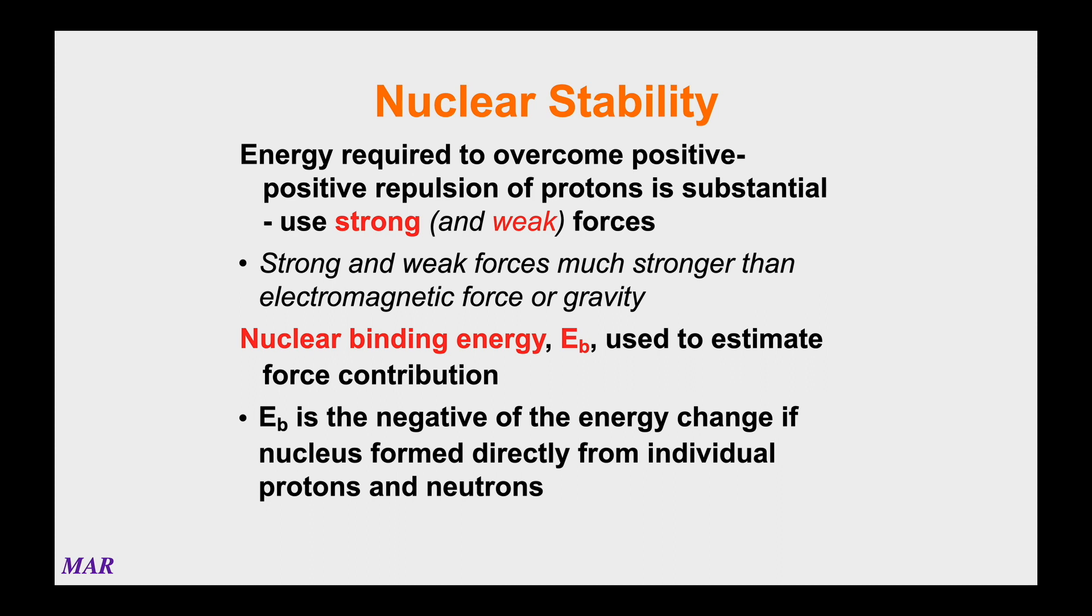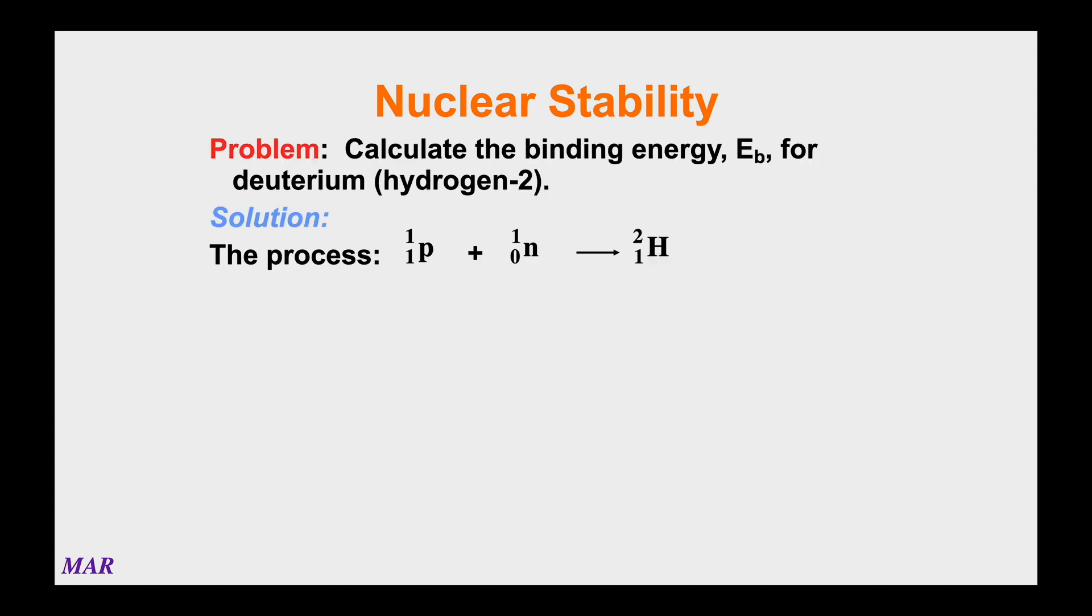We're going to do an example of this E_b calculation for a helium-4 nucleus. Helium-4 comes from two protons and two neutrons, so we're basically going to do a delta E calculation for that reaction. Whatever number we get, we're going to take the negative of it, so binding energies will turn out to be positive numbers. Let's calculate the binding energy for making deuterium. Deuterium is an isotope of hydrogen, hydrogen-2, sometimes referred to as heavy hydrogen. In this process you would take one proton and one neutron, add them together to make hydrogen-2. The protons plus the neutrons making the atom is what you want to do for these binding energy calculations.